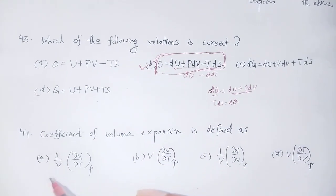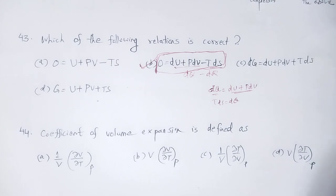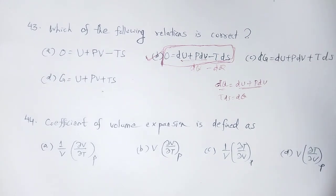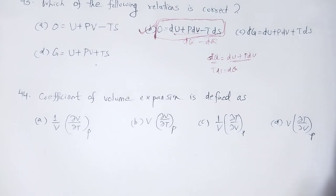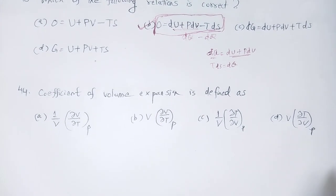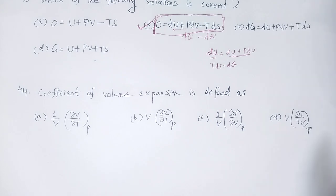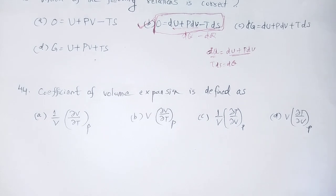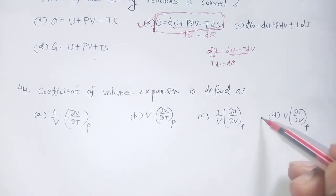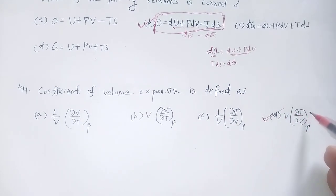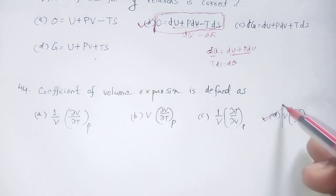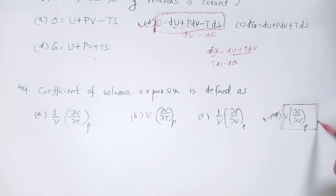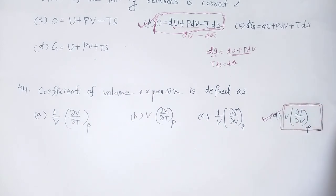Question 44: Coefficient of volume expansion is defined as option number D: (1/V)(del V/del T) at constant pressure. You have to remember that relation.